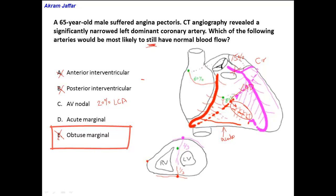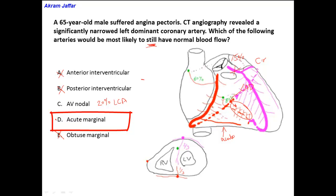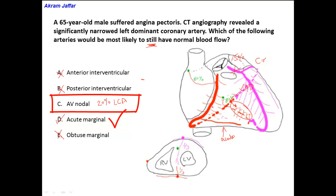The acute marginal artery is the correct answer because it is always a branch of the right coronary artery and will not be affected by this occlusion. The AV nodal artery could be affected in 20% of cases, so option C is wrong. The acute marginal artery — always a branch of the right coronary artery — will not be affected by an occlusion of the left coronary artery.